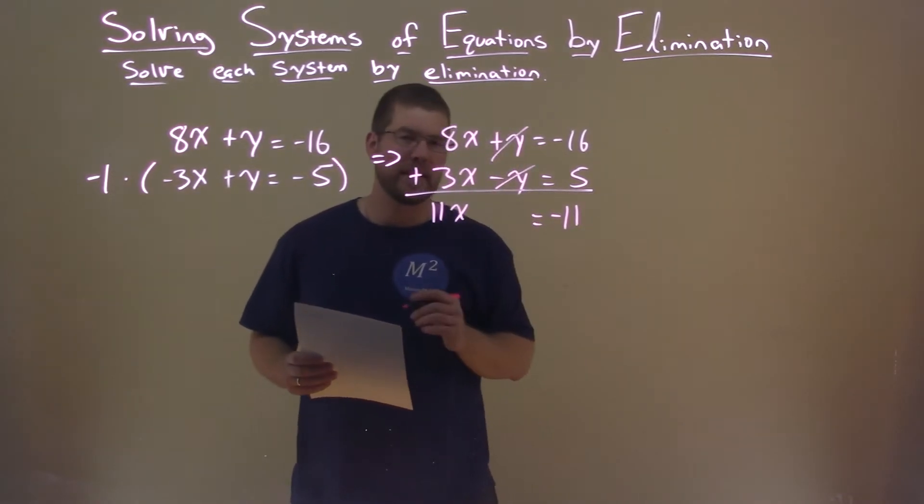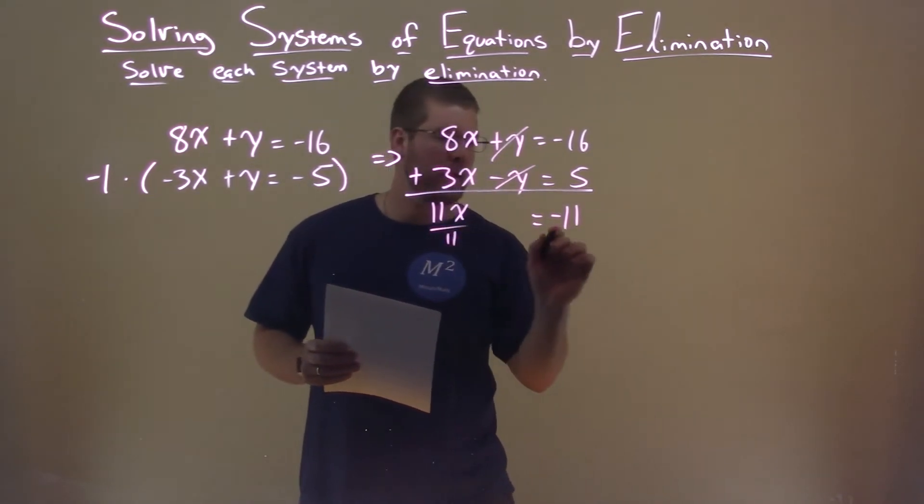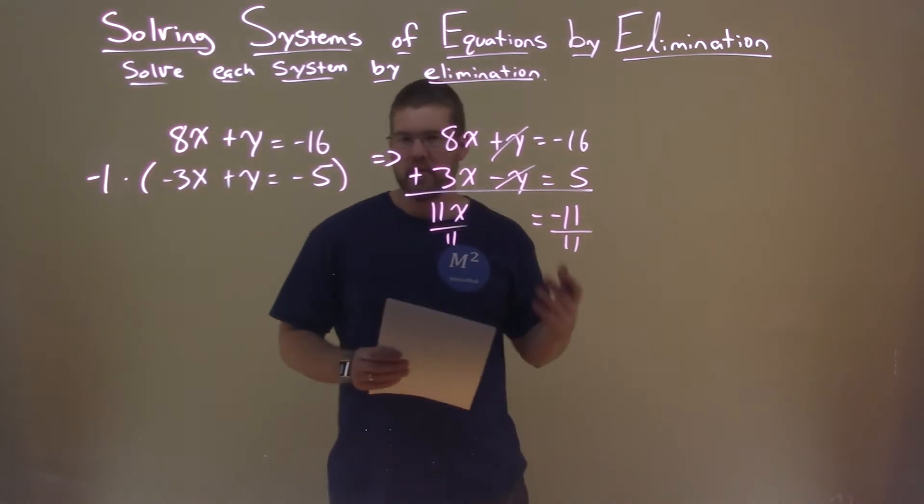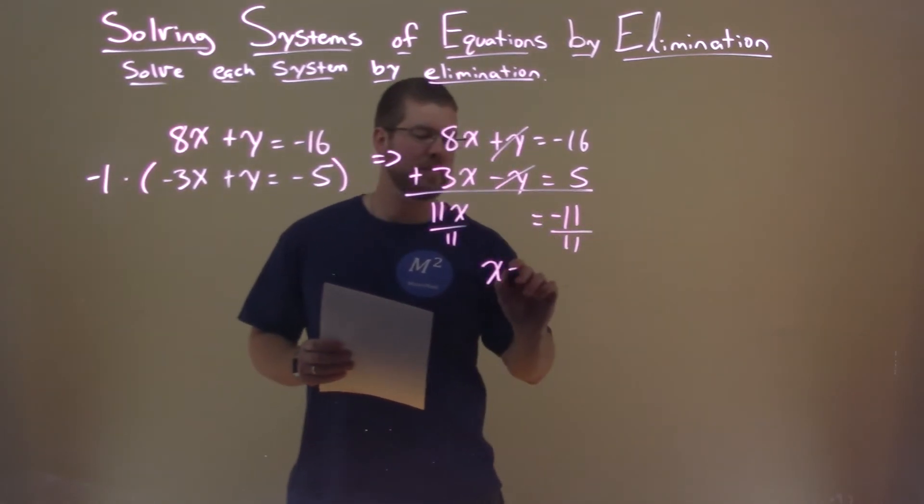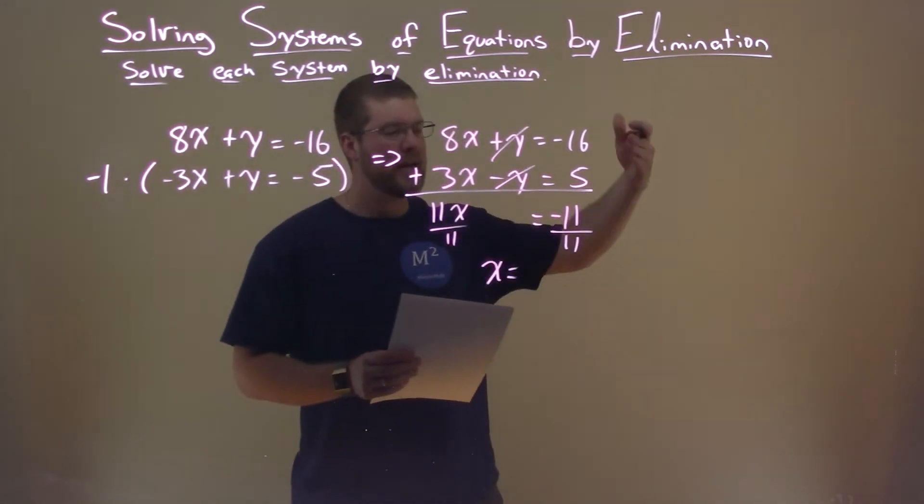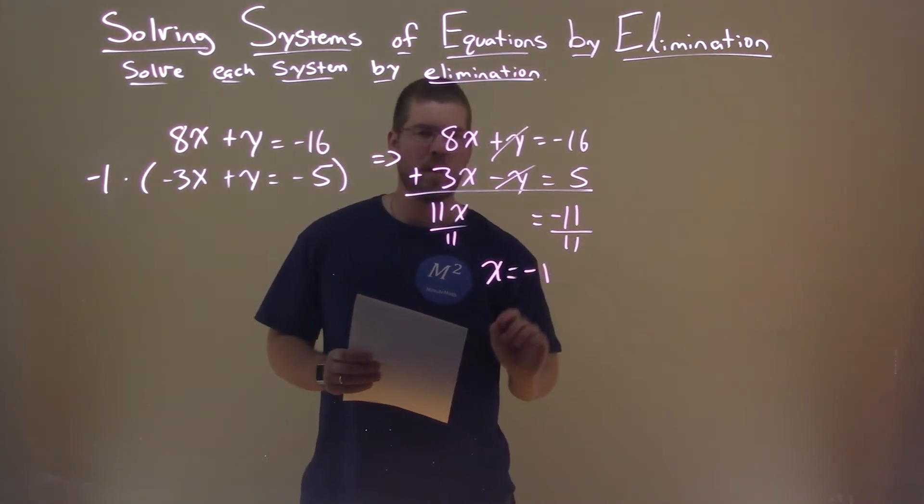All right, now we need to solve for x. Divide both sides by 11, because opposite of multiplication is division. X is by itself on the left-hand side. Negative 11 divided by positive 11, negative 1.